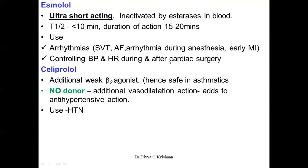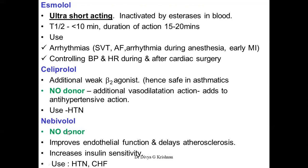Celiprolol has an additional weak beta-2 agonistic action, so it is not purely a beta-1 blocker — it blocks beta-1 while also having agonistic action on beta-2 receptors. This makes it safe in asthmatics as it causes bronchodilatation. It also has an additional nitric oxide donor property, which can cause vasodilatation and add to antihypertensive action. Similarly, nebivolol is also a nitric oxide donor. It additionally improves endothelial function, delays atherosclerosis, and increases insulin sensitivity. It is used for hypertension and congestive heart failure.